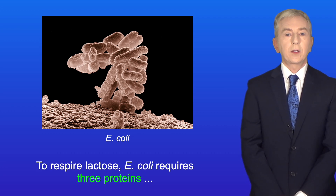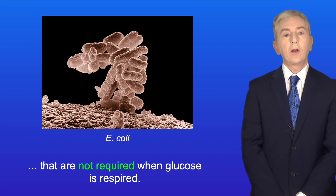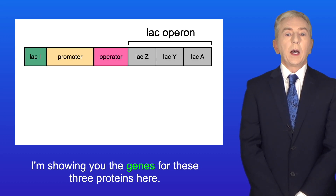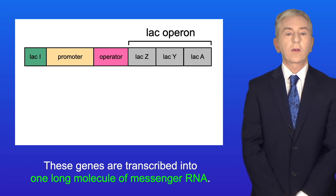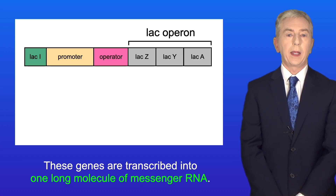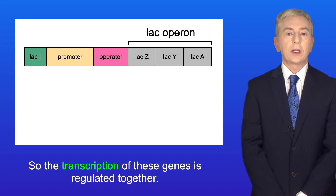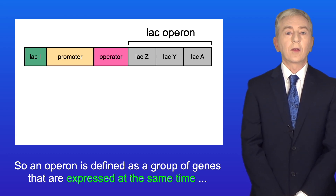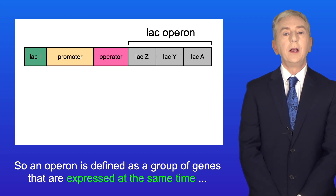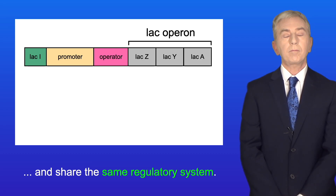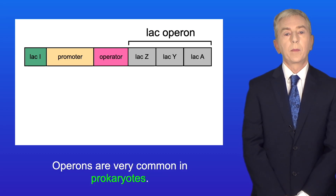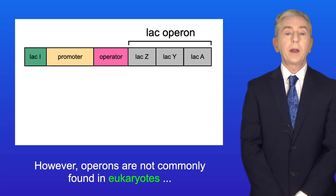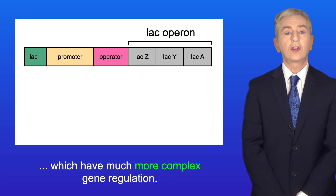To respire lactose, E. coli requires three proteins that are not required when glucose is respired. I'm showing you the genes for these three proteins here. These genes are transcribed into one long molecule of messenger RNA, so the transcription of these genes is regulated together. Scientists say that these three genes are an example of an operon — a group of genes that are expressed at the same time and share the same regulatory system. Operons are very common in prokaryotes, but not commonly found in eukaryotes, which have much more complex gene regulation.